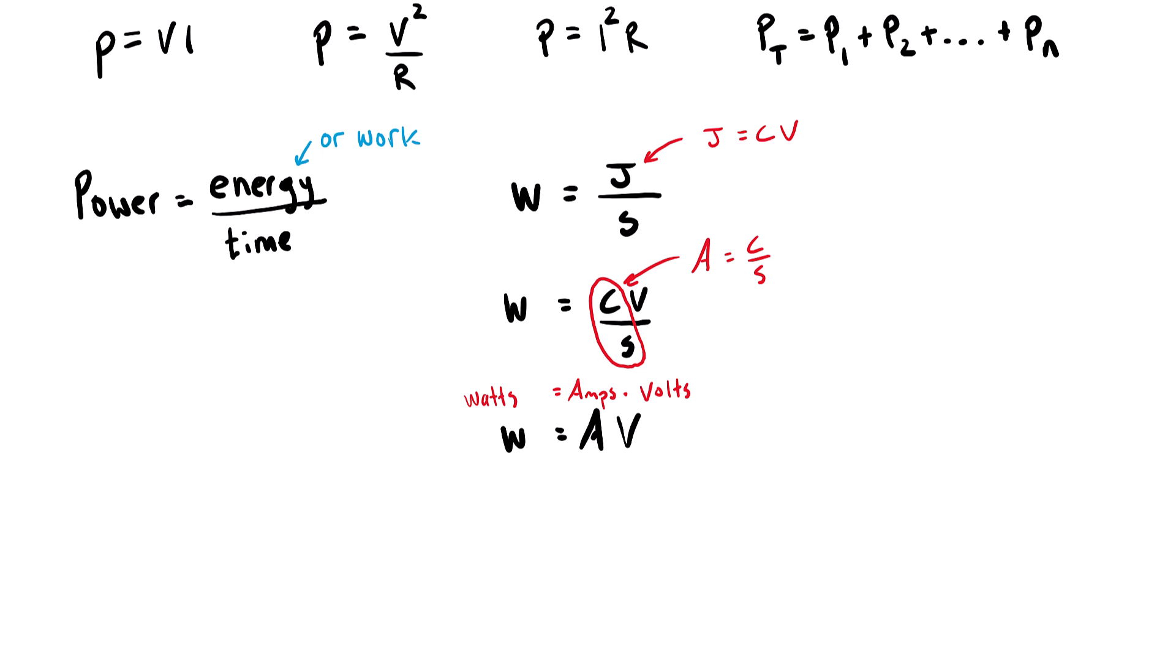And we can rewrite that in terms of the names instead of the units. So this is the same thing as power equals voltage times current, p equals VI.